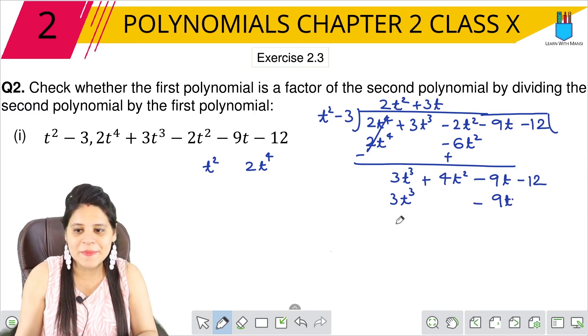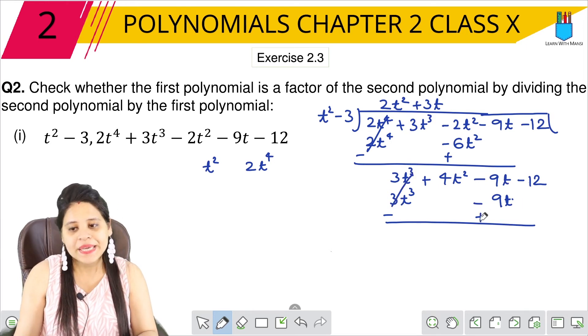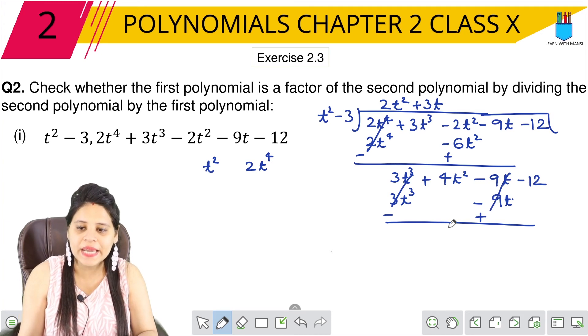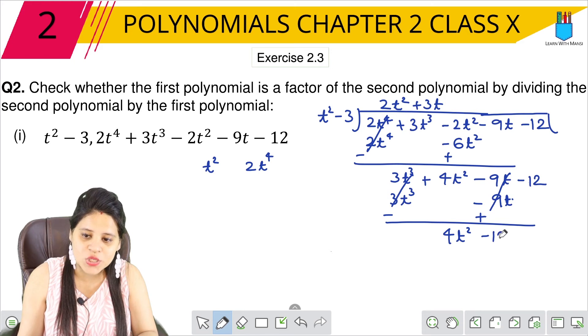Again, plus minus minus. Next step, we will change signs: minus, minus, this is plus. This is cancelled. This is also plus minus minus. Both are the same, canceled. Here we have 4t² - 12.